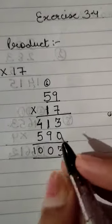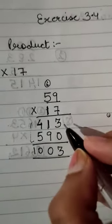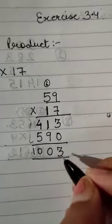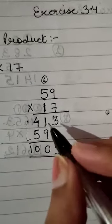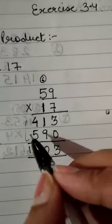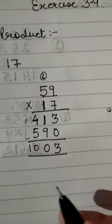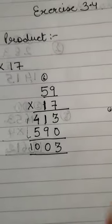Now in the last step we will add this. When we add: 3 plus 0 will be 3. 1 plus 9 will be 10, so write 0 carry 1. 5 plus 4 is 9, plus 1 carry gives 10. So the answer is 1003.